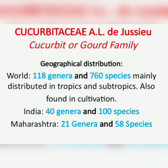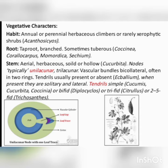Cucurbitaceae family, also known as the gourd family. Geographical distribution: in the world there are 118 genera and 760 species, mainly distributed in tropics and subtropics, also found in cultivation. In India, 40 genera and 100 species are found. Coming to Maharashtra, 21 genera and 58 species are found.